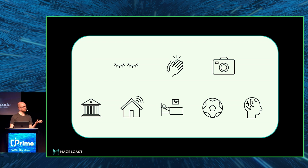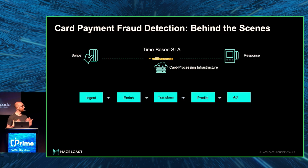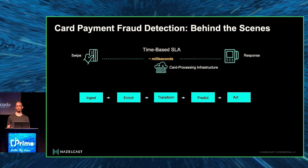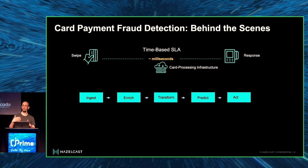Let's take a simple example: a credit card or debit card transaction where you try to withdraw money from your bank account. You take the card, swipe it, and then if it has a PIN code or some validation mechanism, it validates this, and the bank will decide whether to accept the transaction or not.